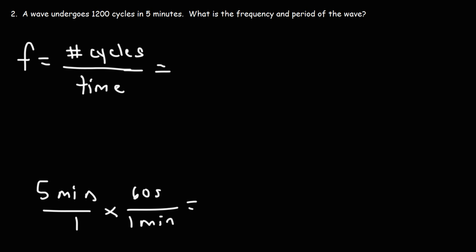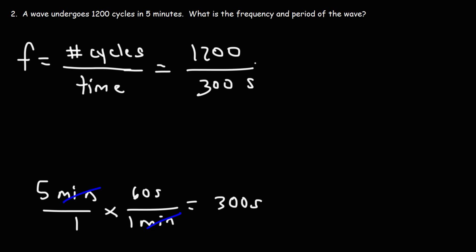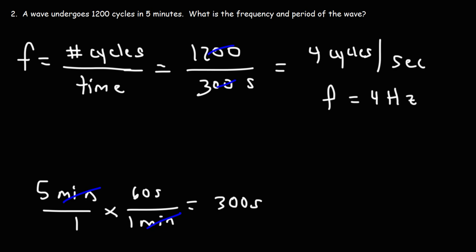So we have 1200 cycles in 300 seconds. Cancelling two zeros, it becomes 12 over 3, which is 4 cycles per second. So the frequency is 4 Hertz — the number of cycles the wave goes through per second.